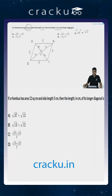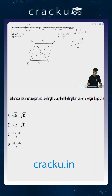The area of a rhombus is the product of the diagonals divided by 2. Each diagonal has length 2a and 2b respectively, so the area = (2a × 2b) / 2. Setting this equal to 12 gives us a × b = 6.